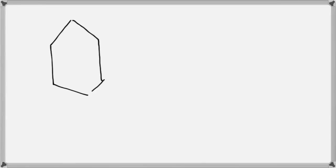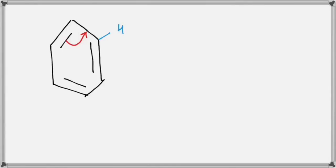Let's try to draw the resonance structures of benzene. The first structure of benzene has no charges but only double bonds, and let's try to move these bonds around. If this bond moves to form a double bond here, you know there is a hydrogen on this carbon, so forming a bond here between these two carbons would give that carbon five bonds — and we cannot break sigma bonds during resonance.